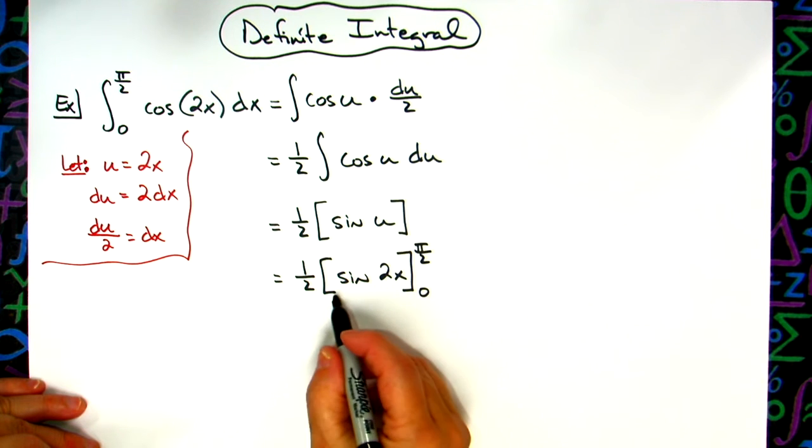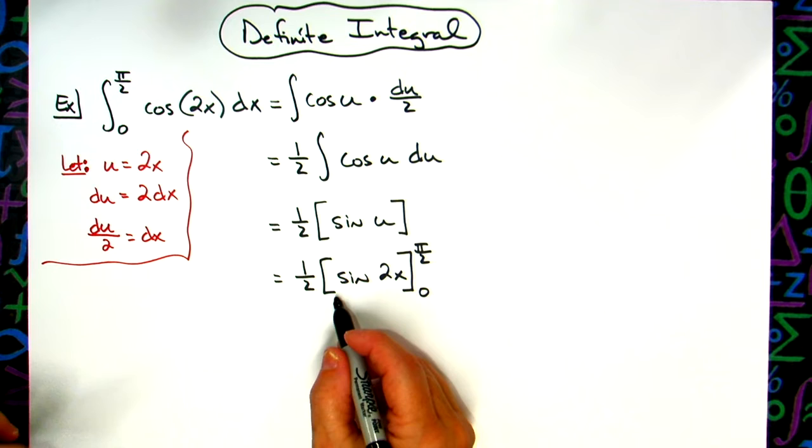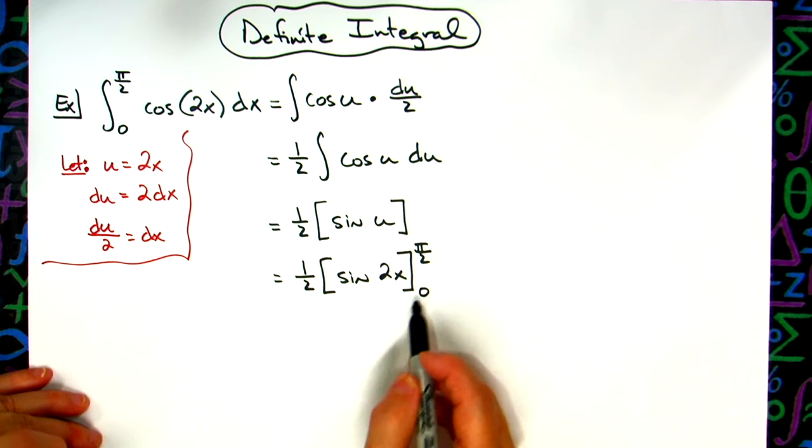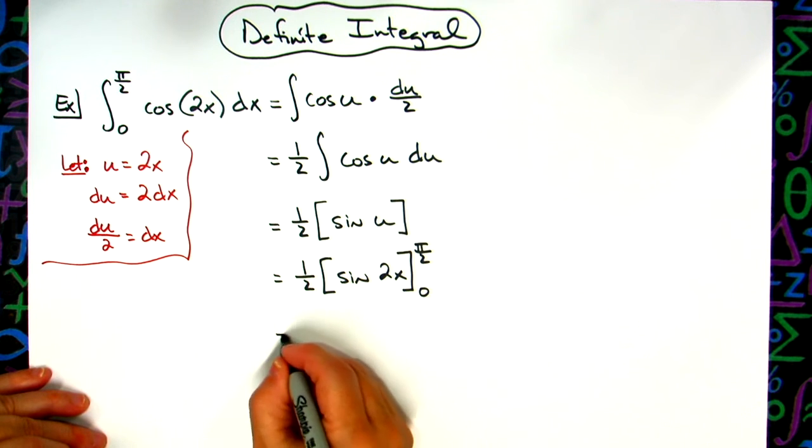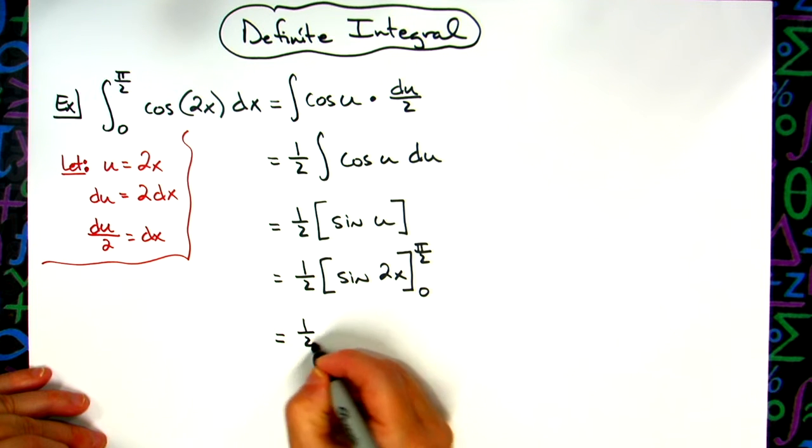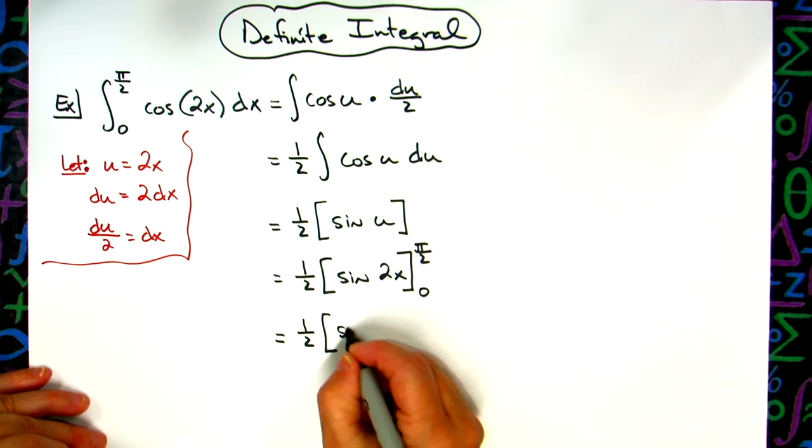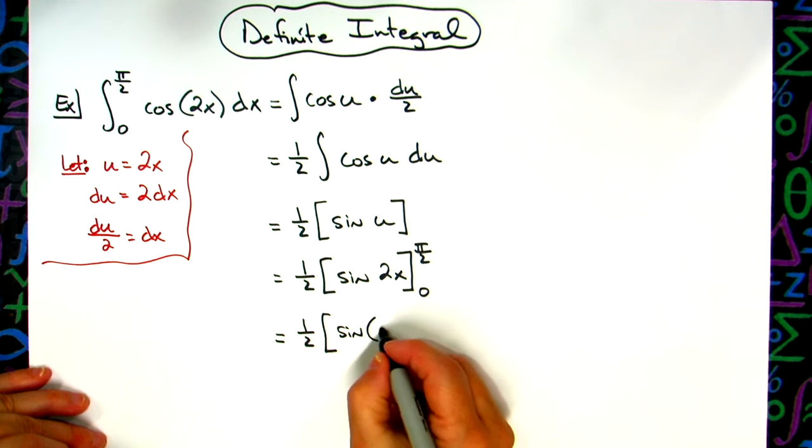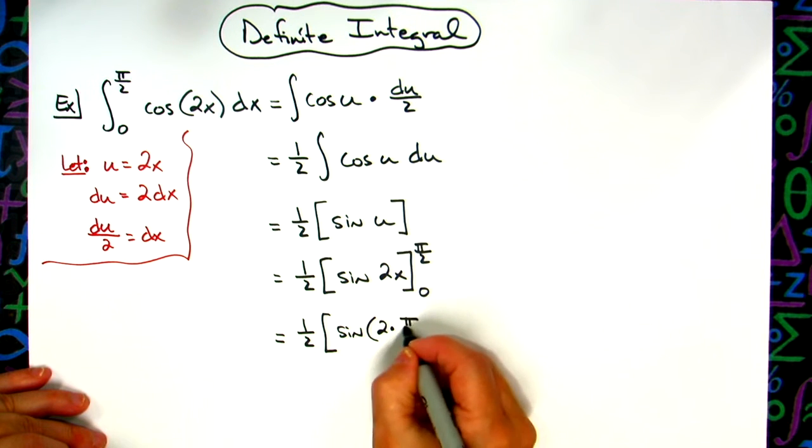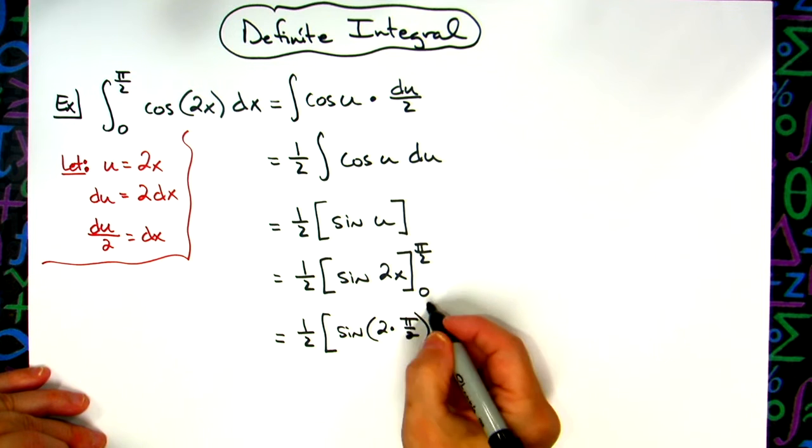So now I can do my substitution of my values and come up with my numerical answer. I'm going to have one-half. We're going to plug in pi over 2, so I'll have sine of 2 times pi over 2, minus now I'm going to plug in the zero, so we'll have sine of 2 times zero.